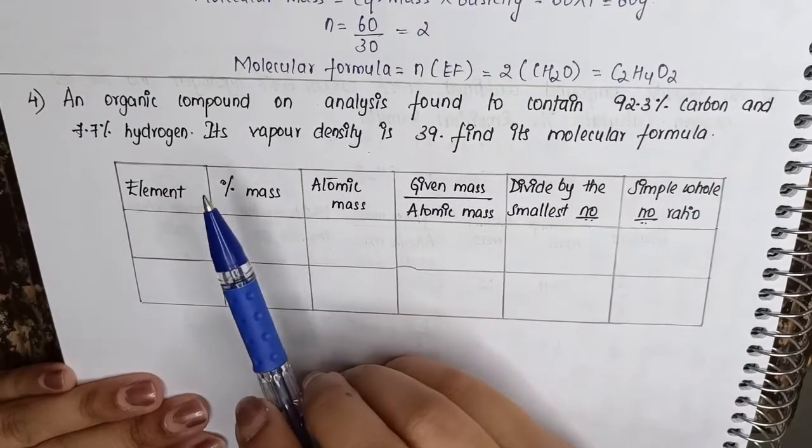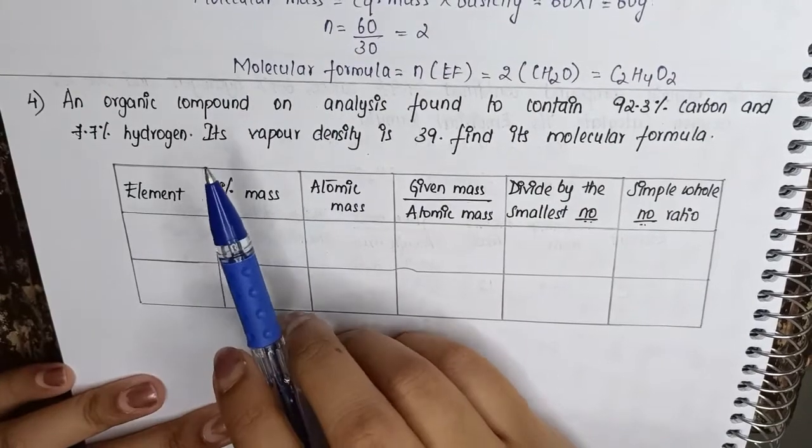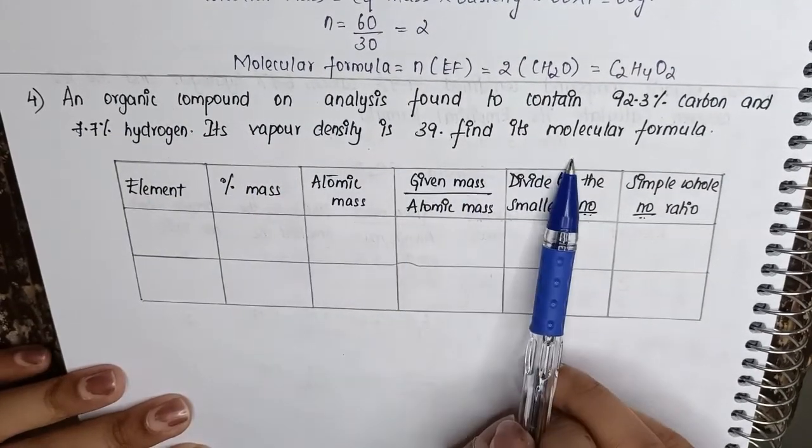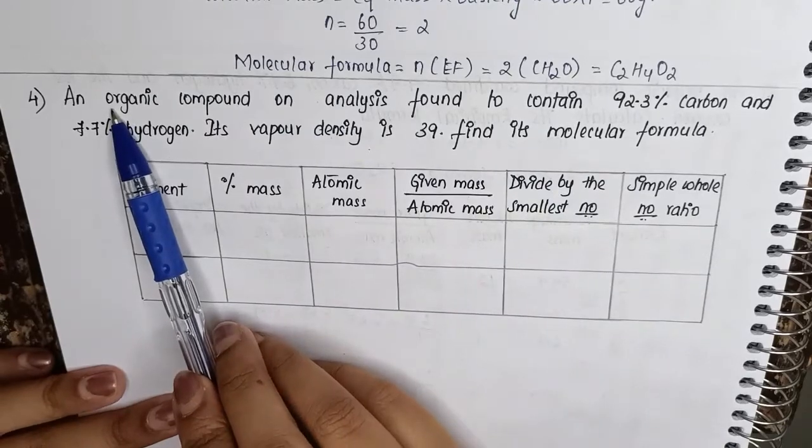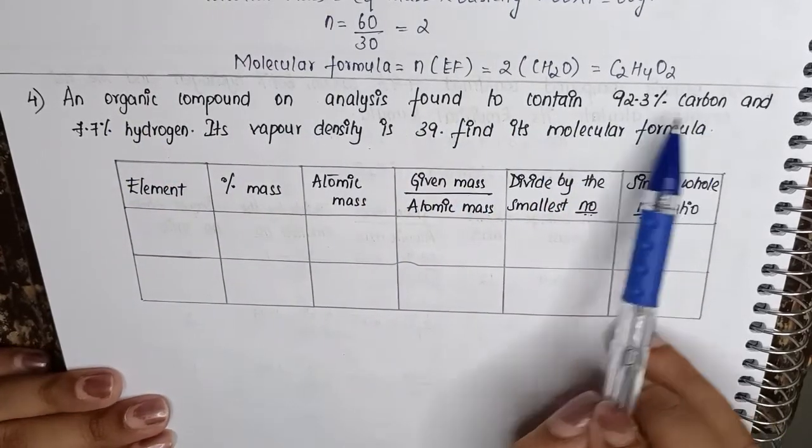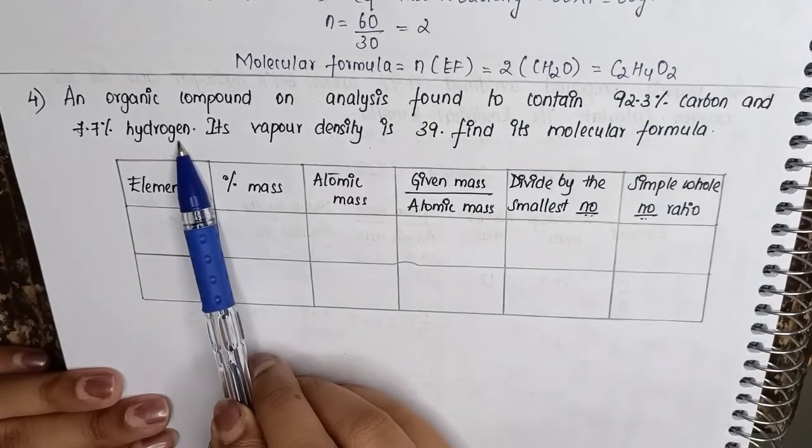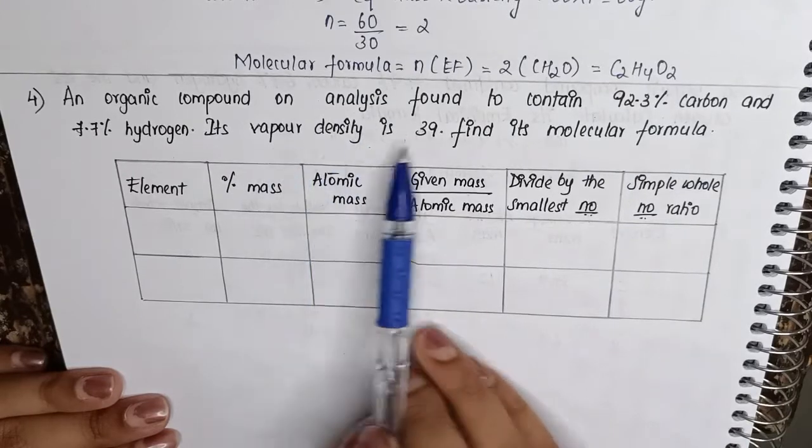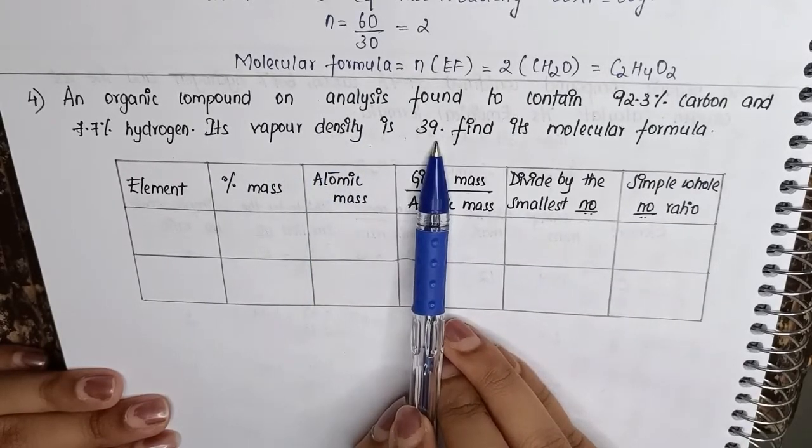So students, our next question is from empirical and molecular formula. An organic compound on analysis was found to contain 92.3 percent carbon and 7.7 percent hydrogen. So two elements only we have. Its vapor density is 39. Find out its molecular formula.